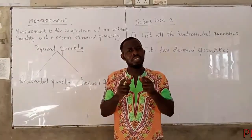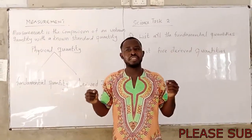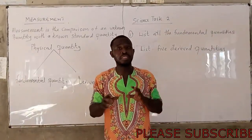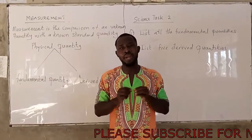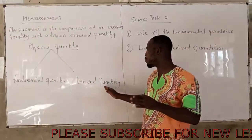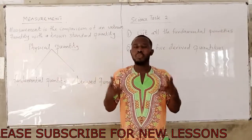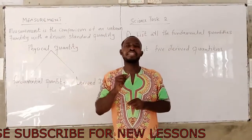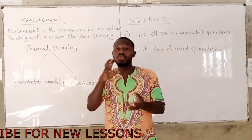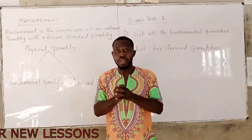Fundamental quantity is independent of other quantities and from which other quantities are formed. Then we have derived quantities. A derived quantity is a quantity that is formed from the combination of two or more fundamental quantities.